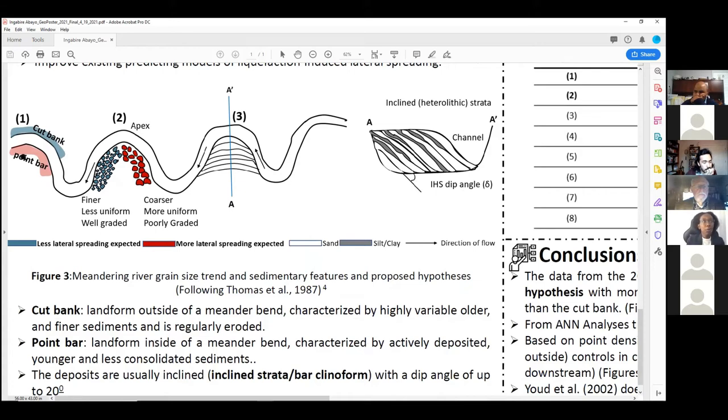To start off, the point bar refers to the landform inside of a meandering bend and the cut bank refers to the outside. The deposits within a point bar are generally relatively young compared to the cut bank deposits, as they're actively deposited as the river is migrating, while the cut bank is being eroded from older sediments. As a result, our first hypothesis states that we expect more lateral spreading within the point bar than within the cut bank because the sediments are younger, less consolidated, and more prone to liquefaction and its consequences, as we see here in figure three.